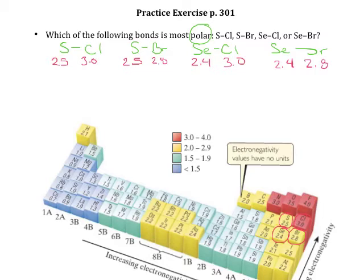So if I do the math there, I can see that the difference between sulfur and chlorine is 0.5. The difference between sulfur and bromine is 0.3. The difference between selenium and chlorine is 0.6, and the difference between selenium and bromine is 0.4.